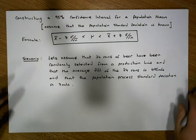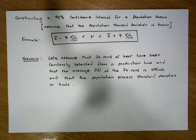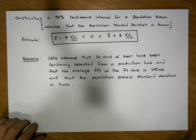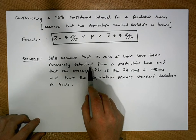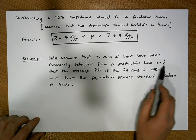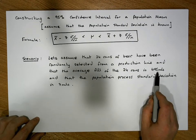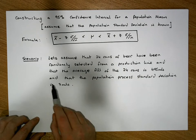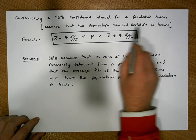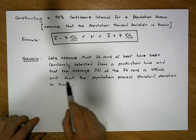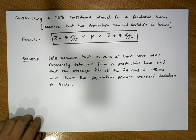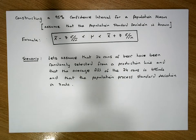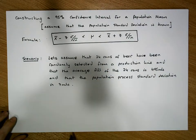Let's have a look at this scenario — the same one used when we constructed the 90% confidence interval. We assume that 24 cans of beer have been randomly selected from a production line, that the average fill of the 24 cans is 495 mils, and that the population process standard deviation is 7 mils. This population standard deviation being given in advance is important here.